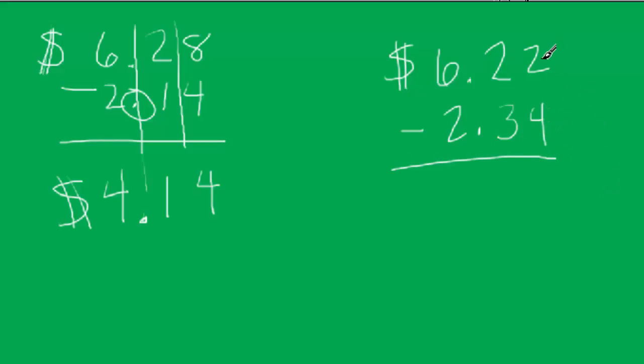We can't subtract 4 from 2, right? So we have to borrow. So what we do is, this column right here, if we just took away this 2 right here, it would be $0.20, right? $6.20. But we know we have $0.20 over here and we're trying to subtract 4. So we're going to have to borrow.